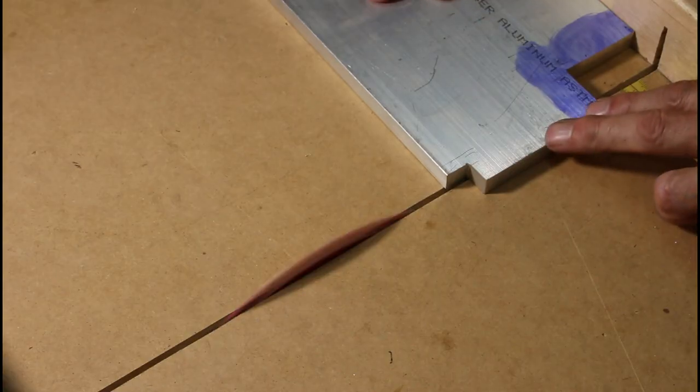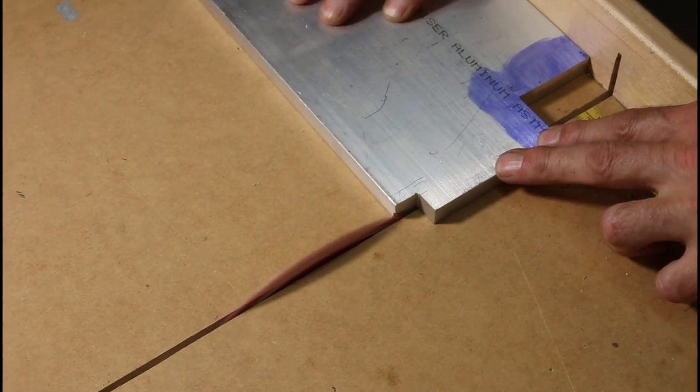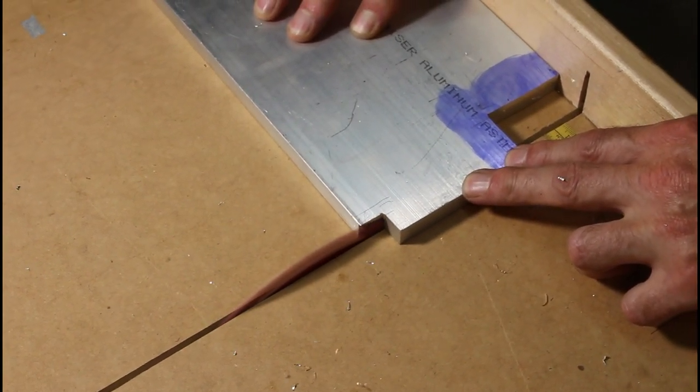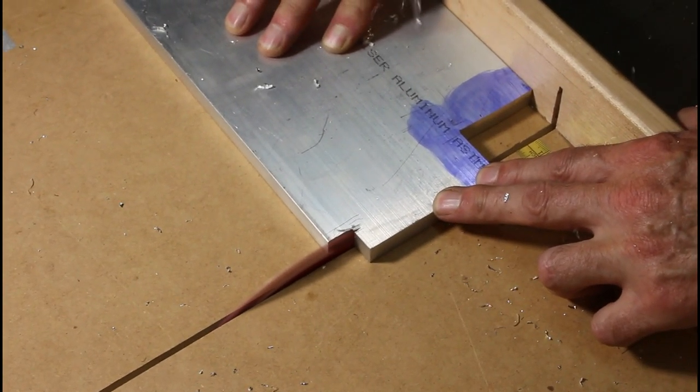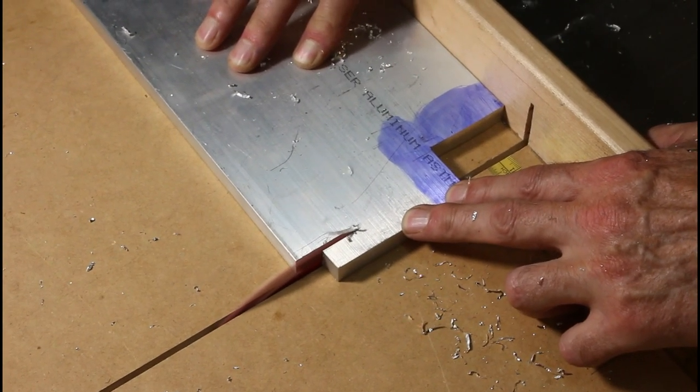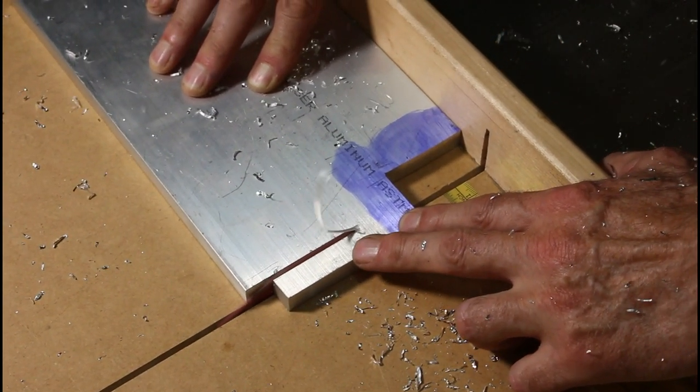So my go-to tool for cutting big chunks of aluminum is the table saw. Here I'm using a sled on the saw for more control and safety and I'm wearing a face shield because those chips are flying right up in my face.